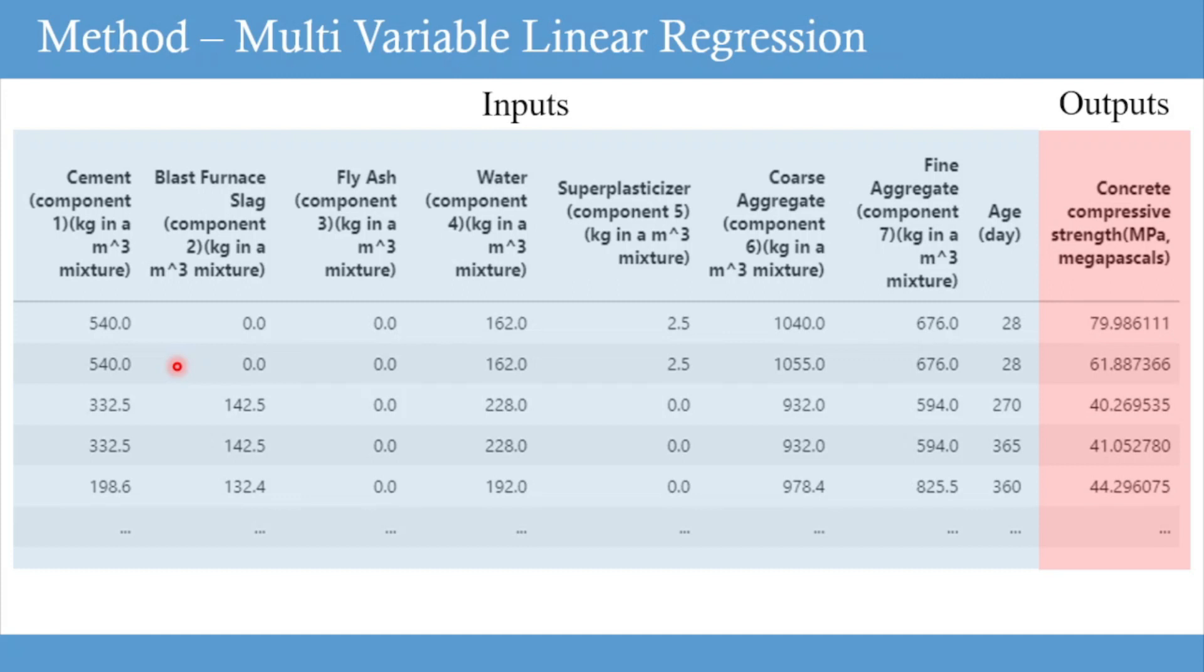The method in this project is called multi-variable linear regression, which means the given data has multiple input parameters and only one output feature. We will predict the strength of concrete using the quantities of various ingredients.